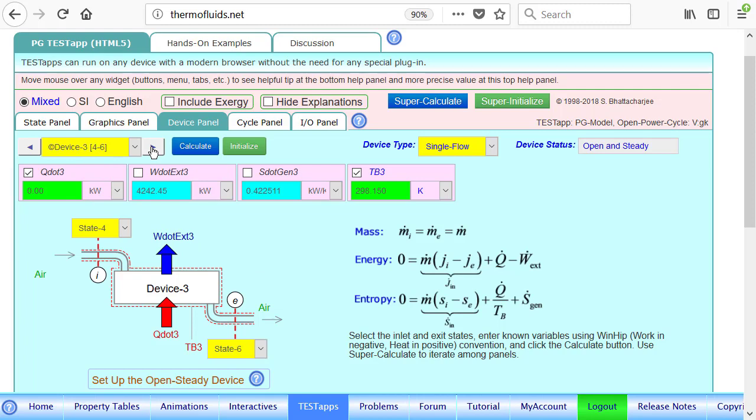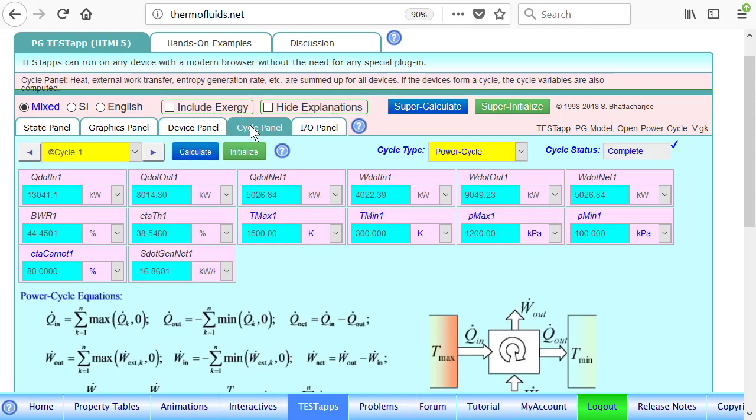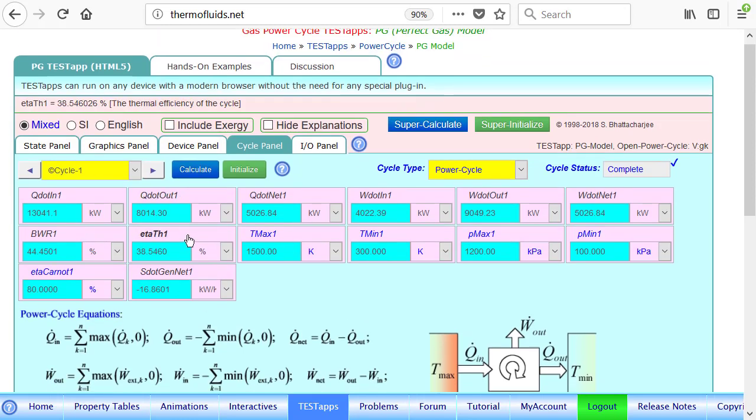Once all the devices are calculated, the cycle panel automatically puts it together, and for instance, in this case, it finds all the relevant quantities such as thermal efficiency, etc.